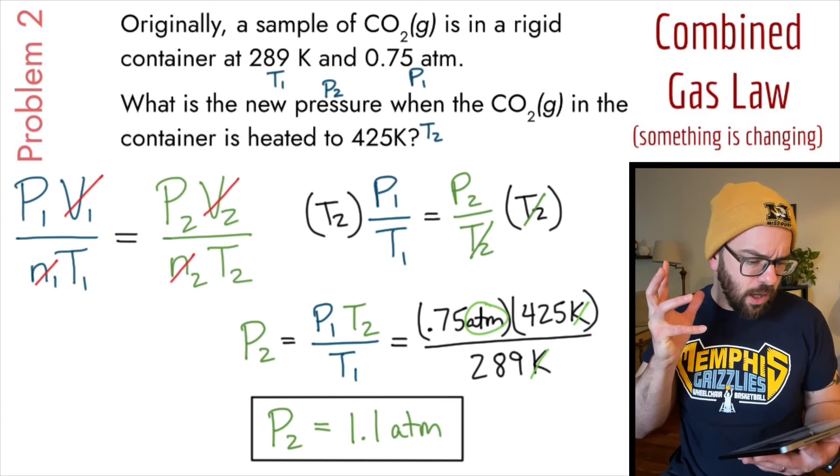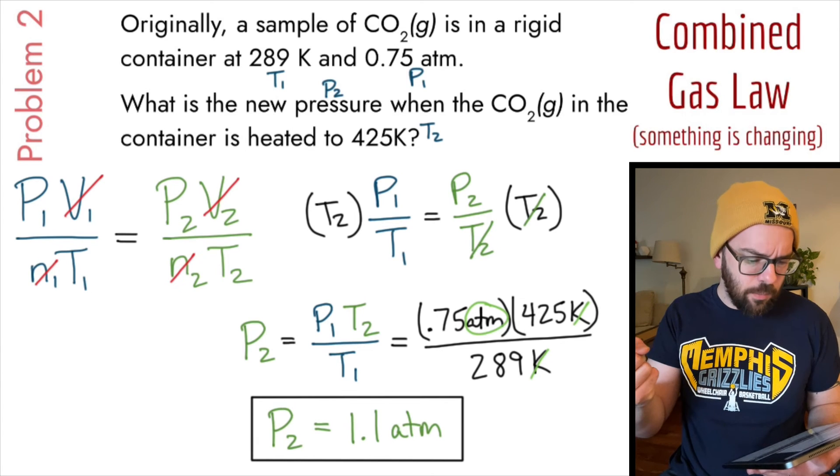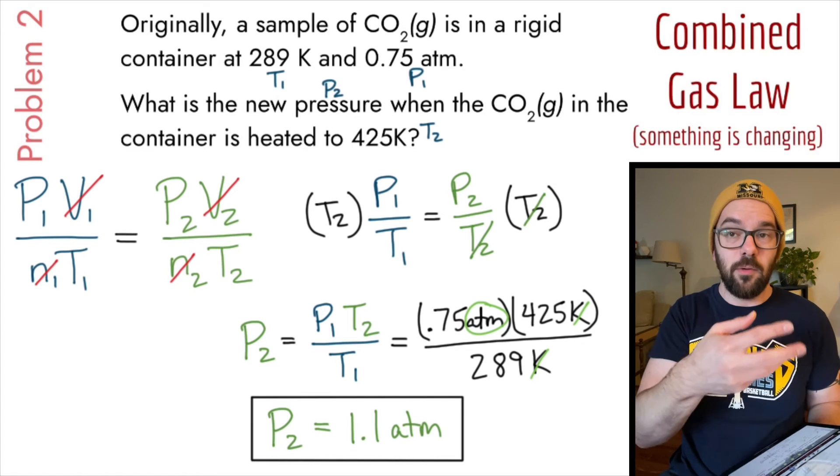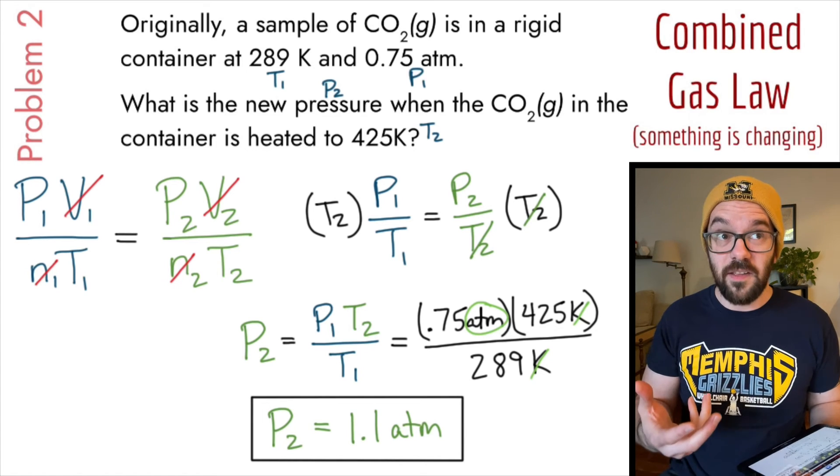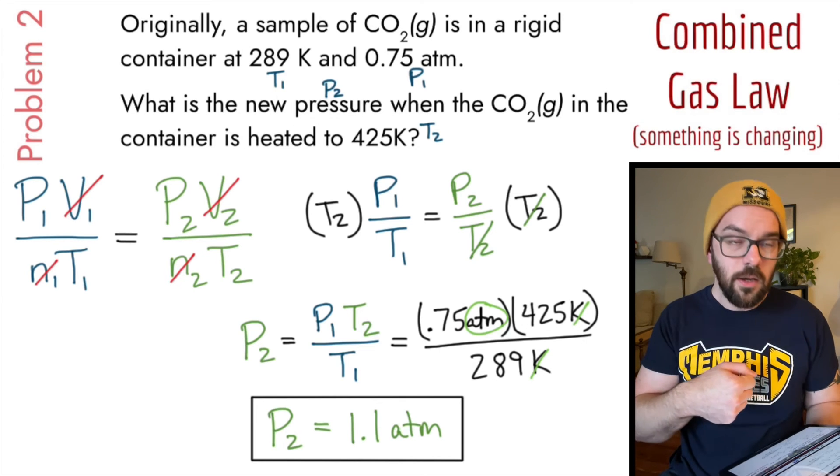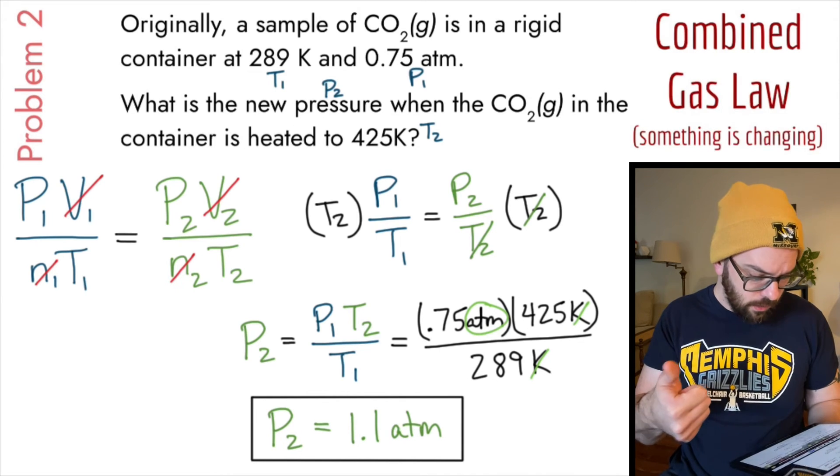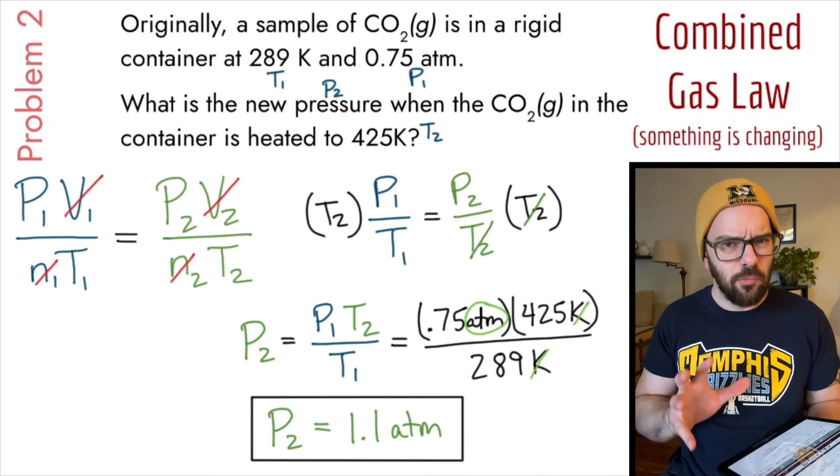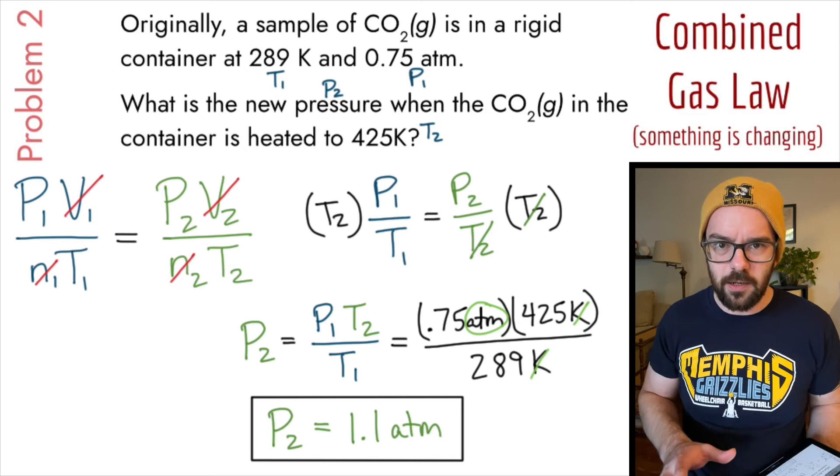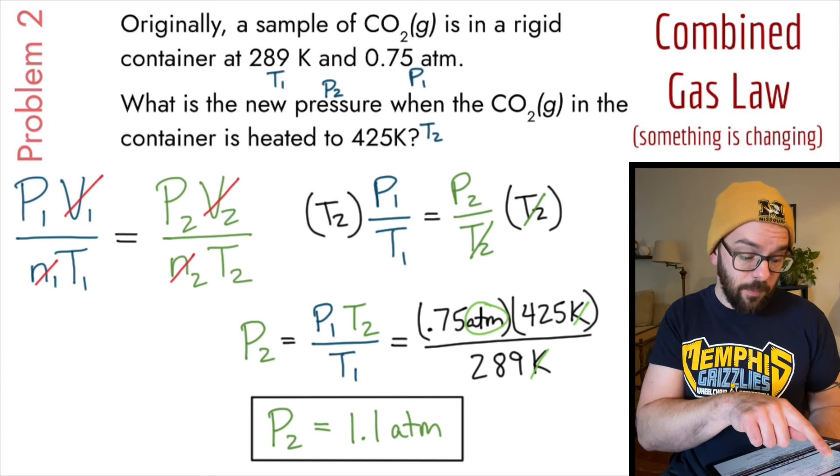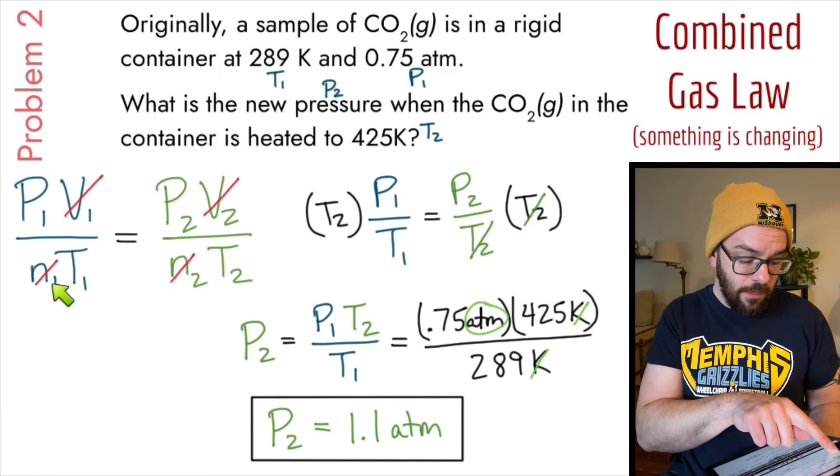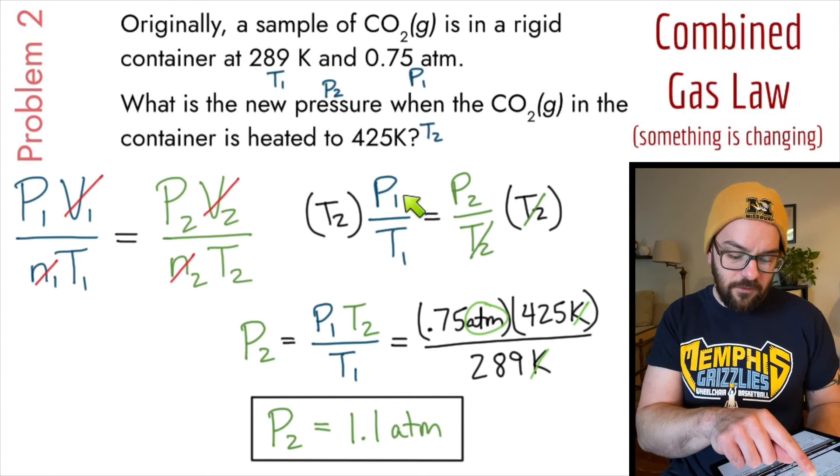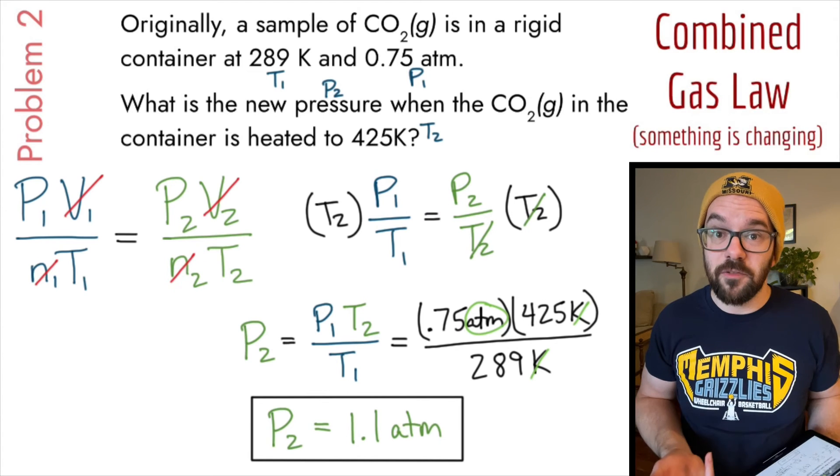All right. So that gives us a pressure of 1.1 atmospheres. And I can kind of double check my answer with some logic here. I increased the temperature. And if I increase the temperature, the gas particles are going to be moving faster. They're going to be colliding with the container a little bit faster, and that's going to cause greater pressure as they collide with the container. So my pressure should have gone up. Did it go up? Yeah, it went from 0.75 atmospheres to 1.1 atmospheres. So I can be reasonably confident I didn't make a big mistake in my calculation. So that's how we use the combined gas law. I started by writing the whole gas law out. Then I crossed out any variables that aren't changing to simplify my equation. Then I isolate the variable that I need to solve for. And then I just do some algebra from there.